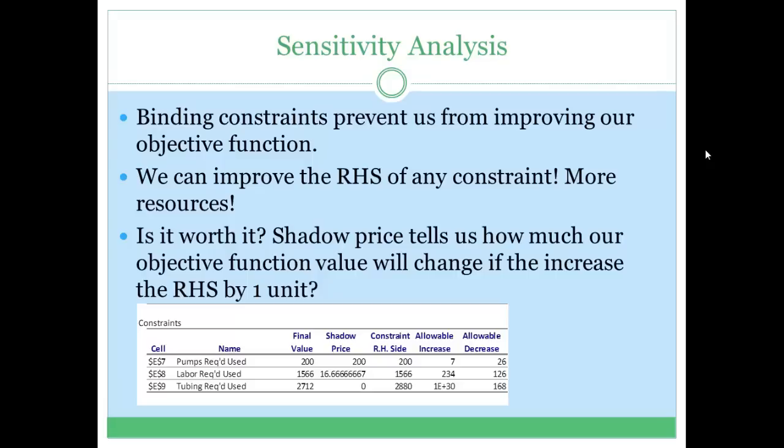We talked about binding constraints in the answer reports, but we can also find out about binding constraints in the constraints table in the sensitivity report. A constraint is binding if the left-hand side value after the optimal solution is equal to the right-hand side value. How do we find the left-hand side value? We take the optimal solution of the decision variables and plug it into the linear function on the left-hand side of the constraint.